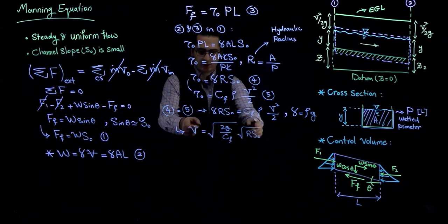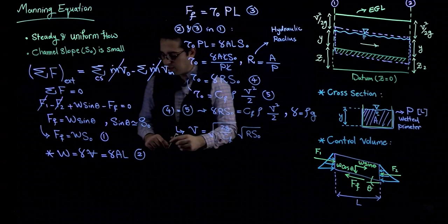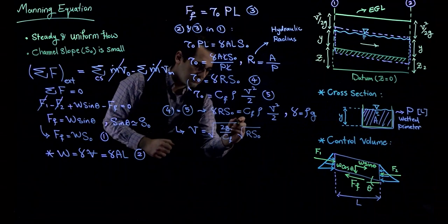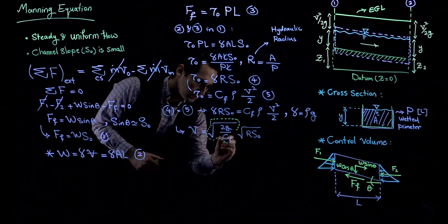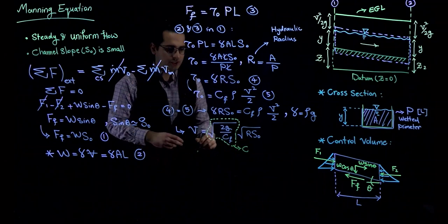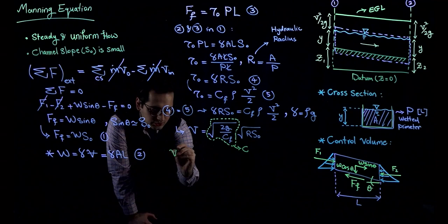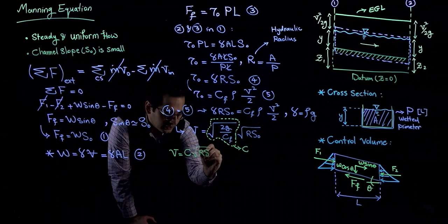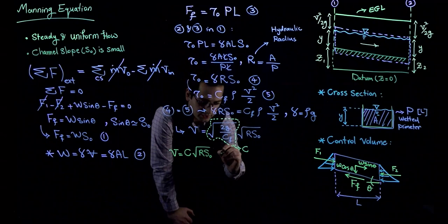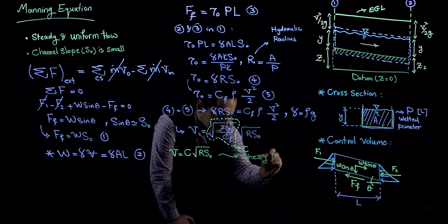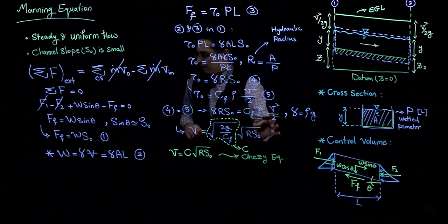This equation gives me the velocity of the flow. The term involving the friction factor and gravity can be written as a coefficient C, so this equation simplifies to velocity equals C times R to the power one-half times S sub zero to the power one-half. This is the well-known Chezy equation, named after French engineer Chezy, who proposed this equation in 1775.